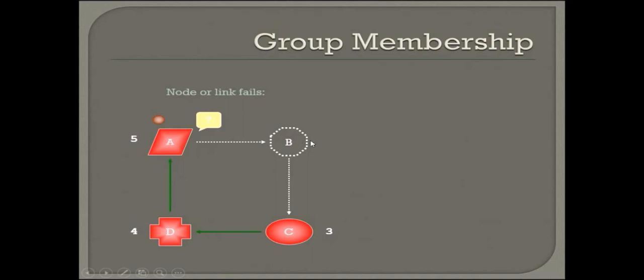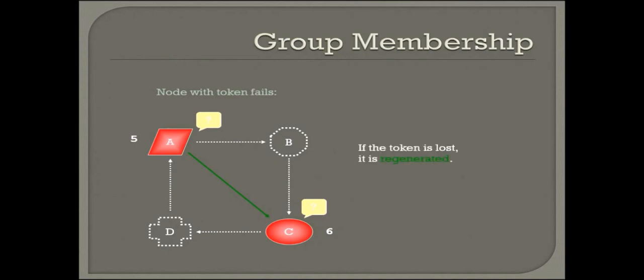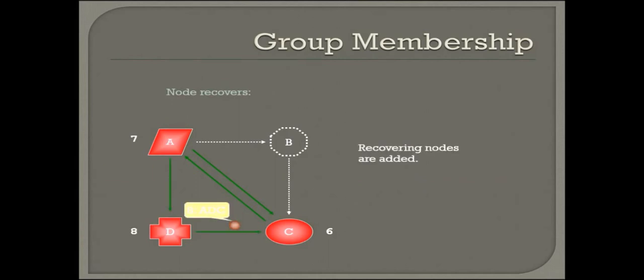This is a token ring-based group membership protocol. Token carries a group membership list and a sequence number. The token is moving. If a node or link fails, the node is excluded and bypassed. If the node with token fails, the token is lost and regenerated. Higher sequence number always prevails.